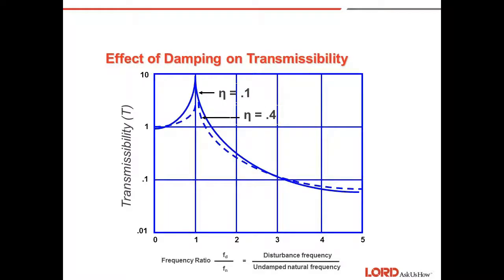The effect of damping on transmissibility. Here transmissibility is plotted for two different levels of hysteresis damping. You can see that the greater amount of damping, loss factor n, the lower the transmissibility at resonance. For frequency ratios above the square root of two in the isolation region, the amount of damping does not affect transmissibility.